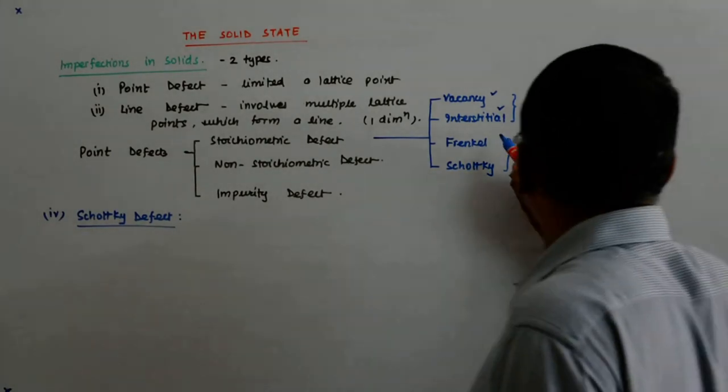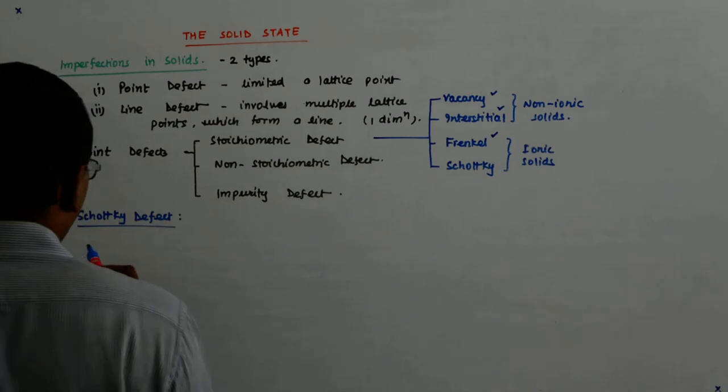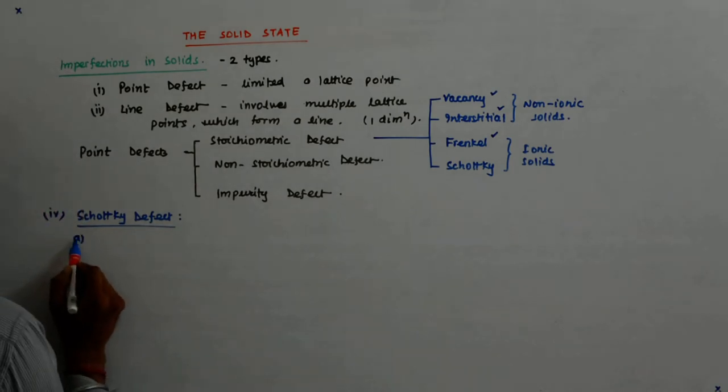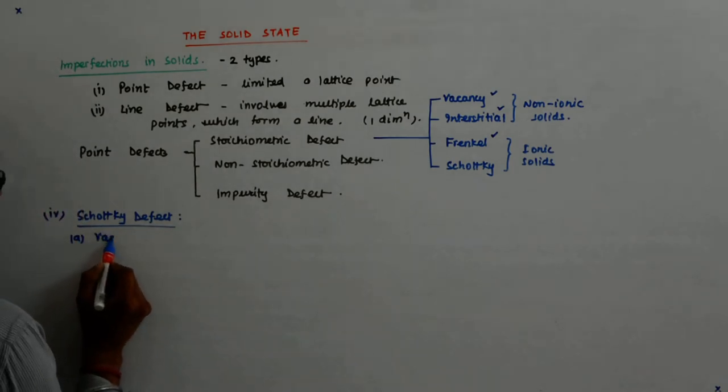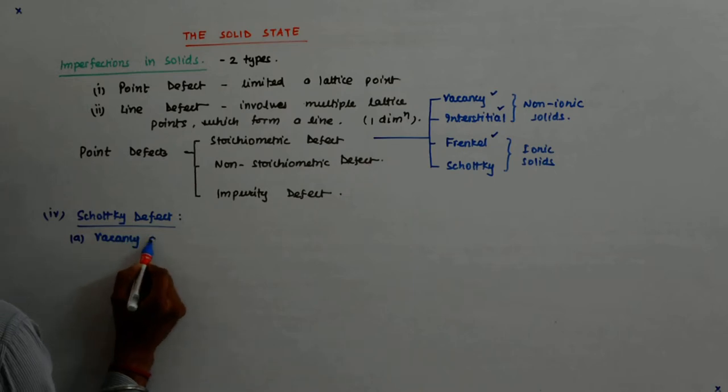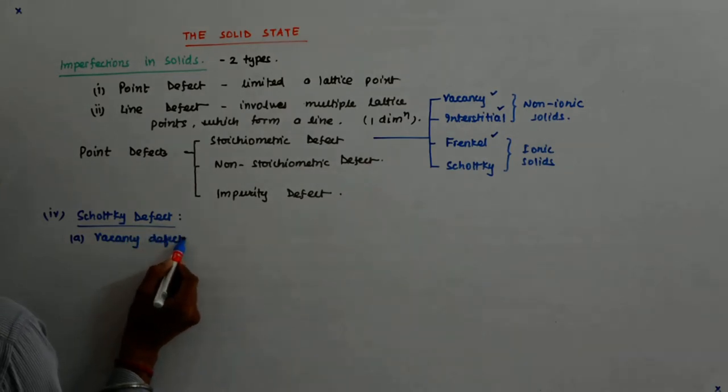Now we come to the fourth one. So we did this. Schottky defect is nothing but a vacancy defect in ionic solids.